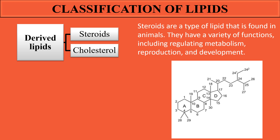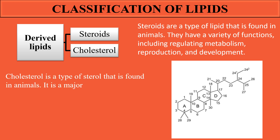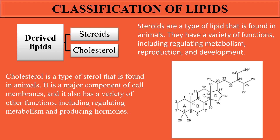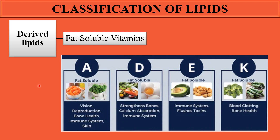Steroids are also a derived form of lipids with many functions — they are involved in regulating metabolism, reproduction, and development. Cholesterol is one type of steroid. It is a main component of the cell membrane, where it is present among the fatty acid tails as a fluid that helps the tails move freely inside the membrane. Cholesterol is also involved in metabolism and the production of hormones like aldosterone, cortisol, testosterone, and estrogen.